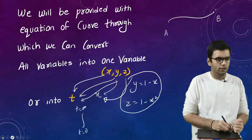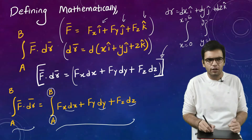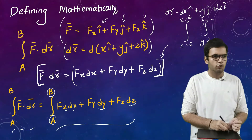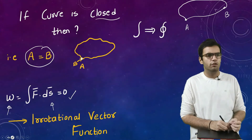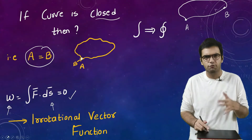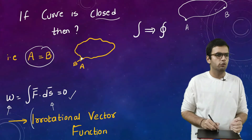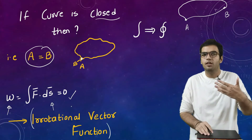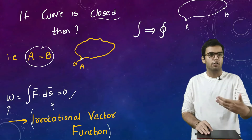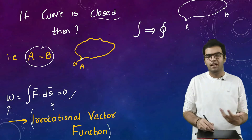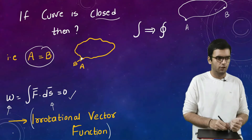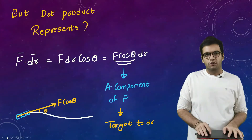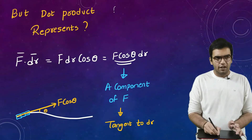Line integration tells us about the circulation of elements across dx, dy, and dz. If the line integration is zero, there is no circulation, and the function is referred to as an irrotational vector function — whenever our line integration over a closed curve is zero.